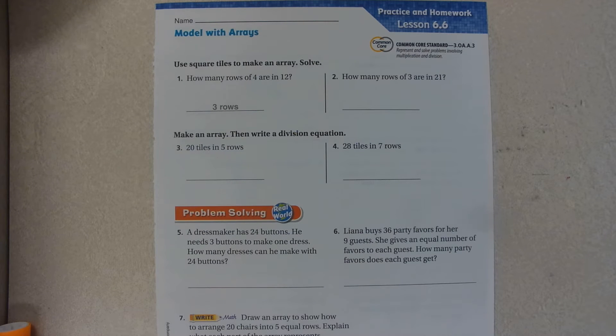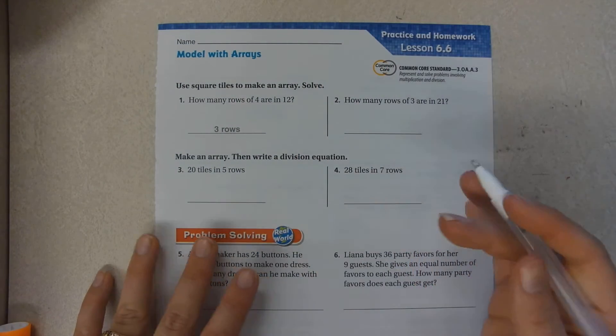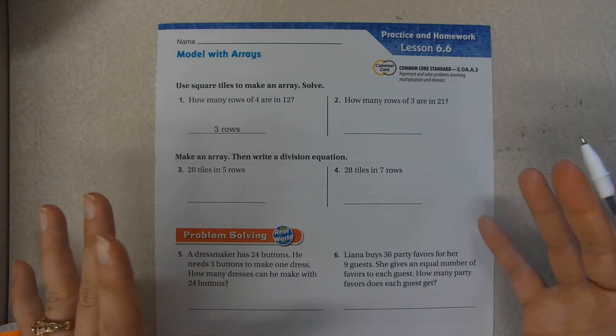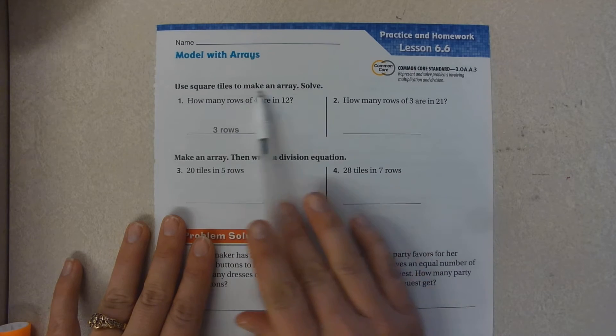Hello boys and girls, today we will be working on lesson 6.6 in the go math book. It's about modeling with arrays. Now an array has rows and columns. Let's try this first one.